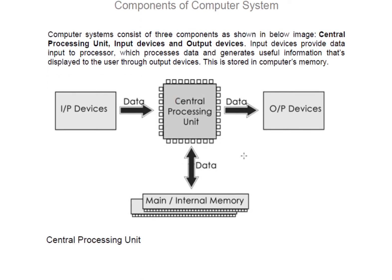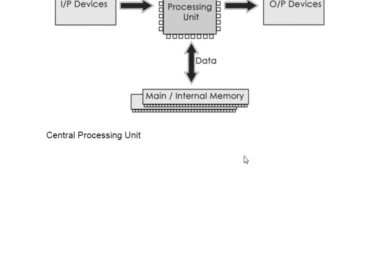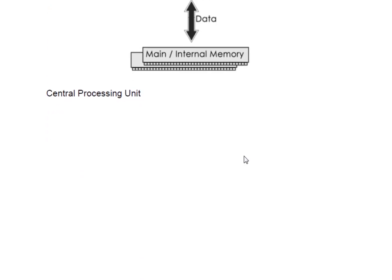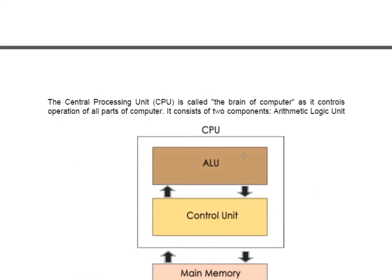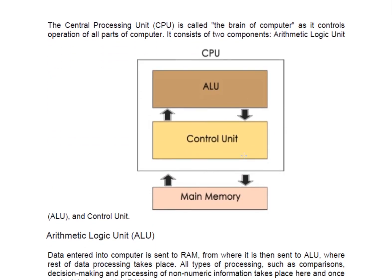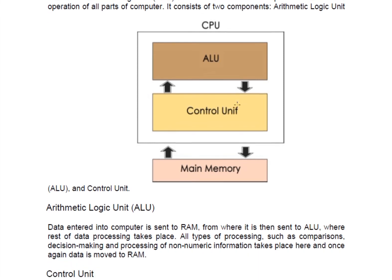First of all, we will understand the central processing unit. The central processing unit contains two important parts: the ALU and the control unit. The ALU actually takes decisions about the data — how it should be processed, for example whether it should be processed for arithmetic operations or for decision-making.